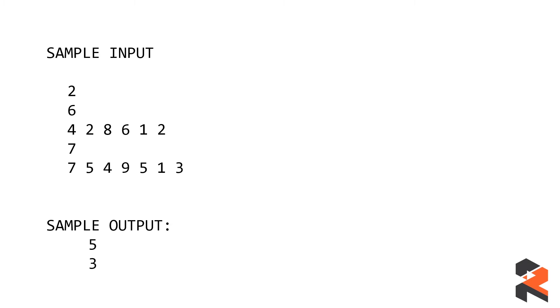Similarly, the second test case has seven elements. The output is 5 and 3 respectively. Let's look at the explanation for why these are the answers.